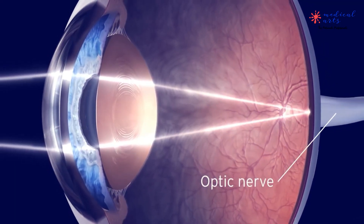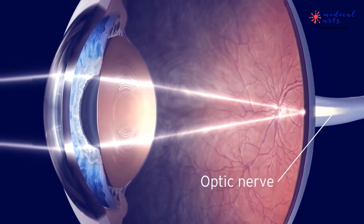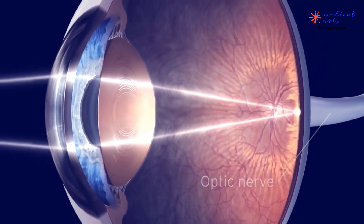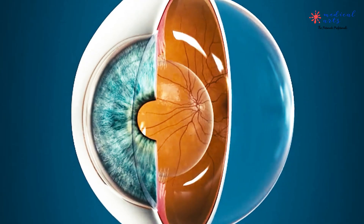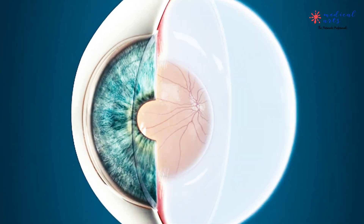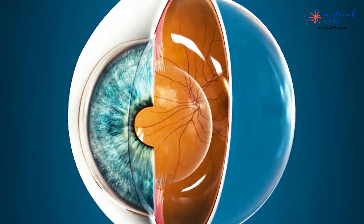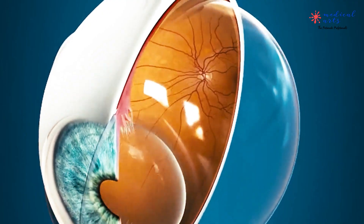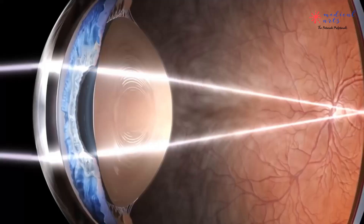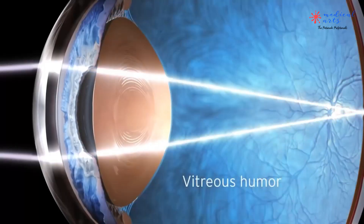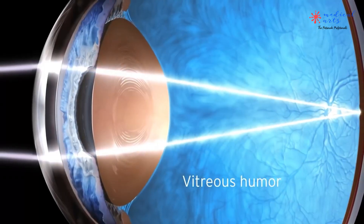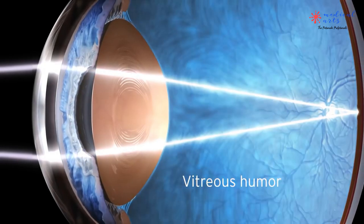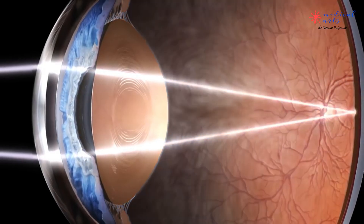Inside these three layers, there is a vitreous cavity that lies between the lens and the back of the eye. A jelly-like transparent fluid called vitreous humor fills this cavity. Vitreous humor plays an important role in maintaining the round shape of the eye.